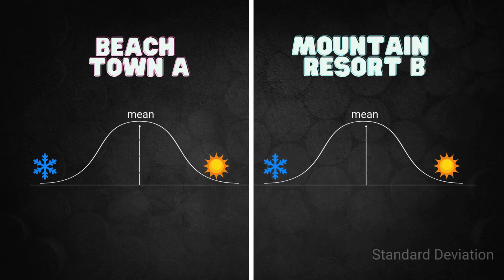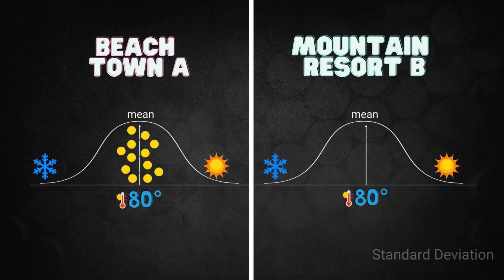Let's say you're choosing between two vacation spots. Both places have an average temperature of 80 degrees Fahrenheit. Sounds perfect, right? But here's the catch. Beach Town A has daily temps that are pretty consistent, sunny, predictable, easy to pack for. Mountain Resort B? Total chaos. Snow boots one day, sunscreen the next. Same mean, very different vibes.